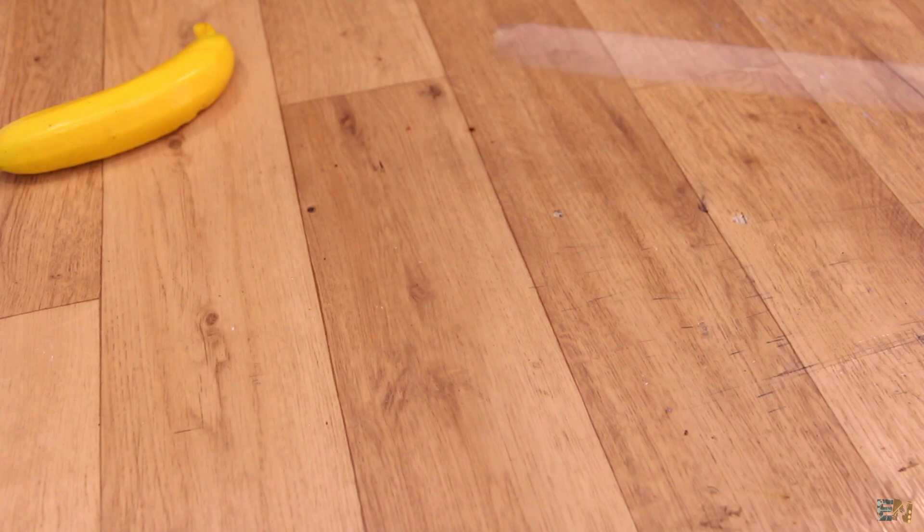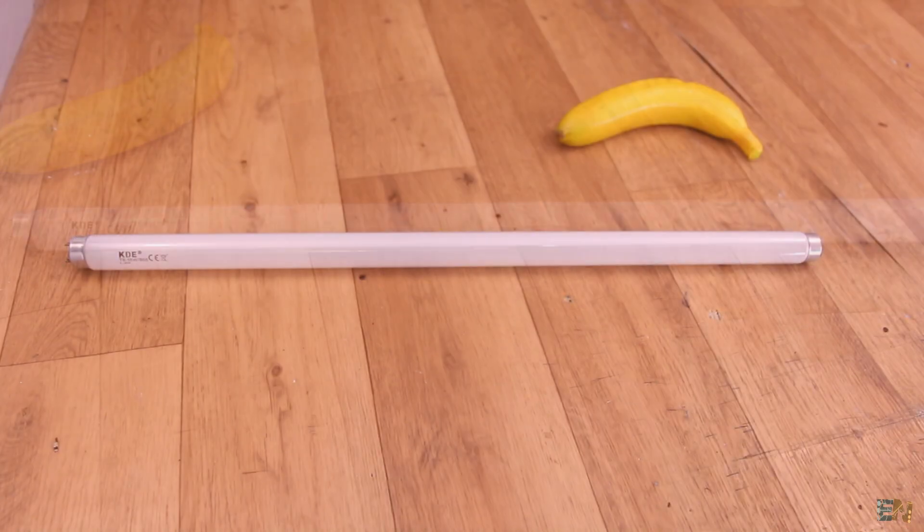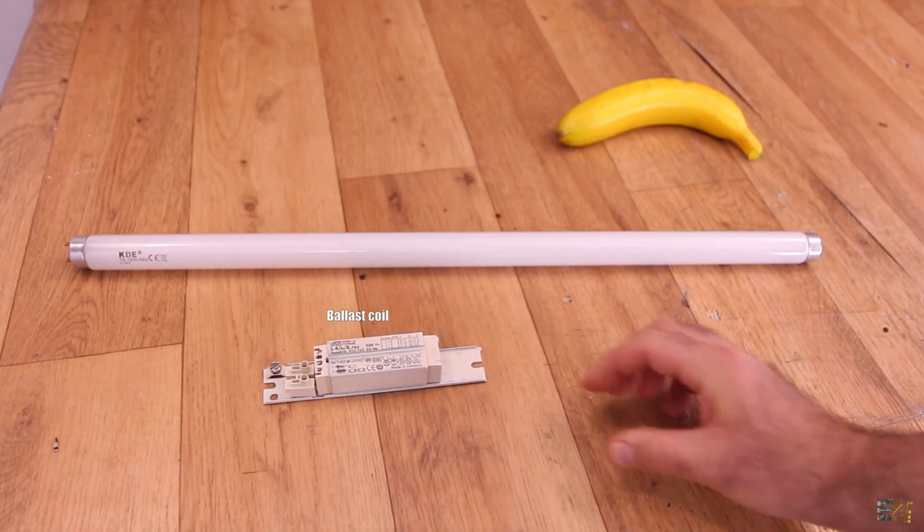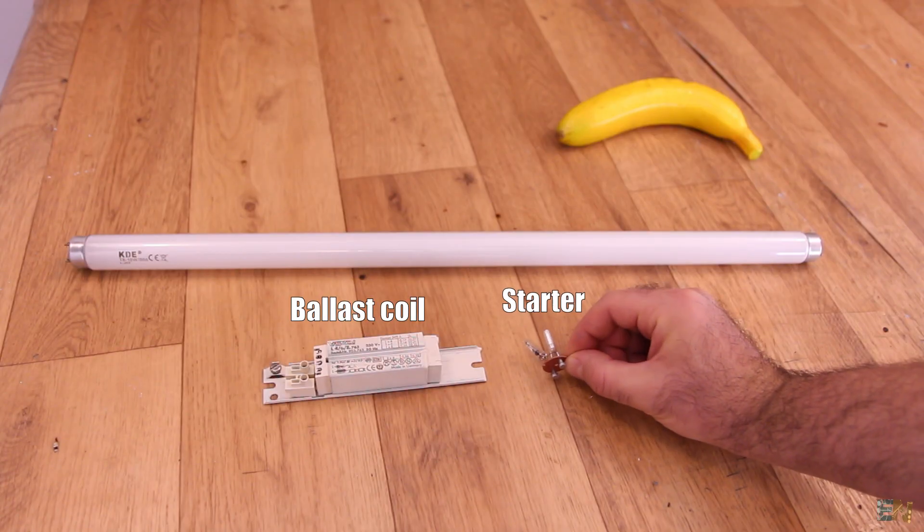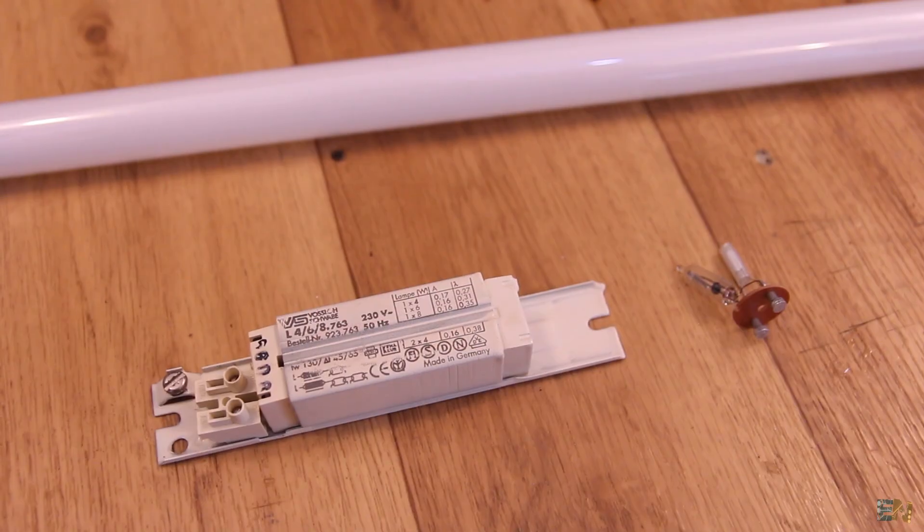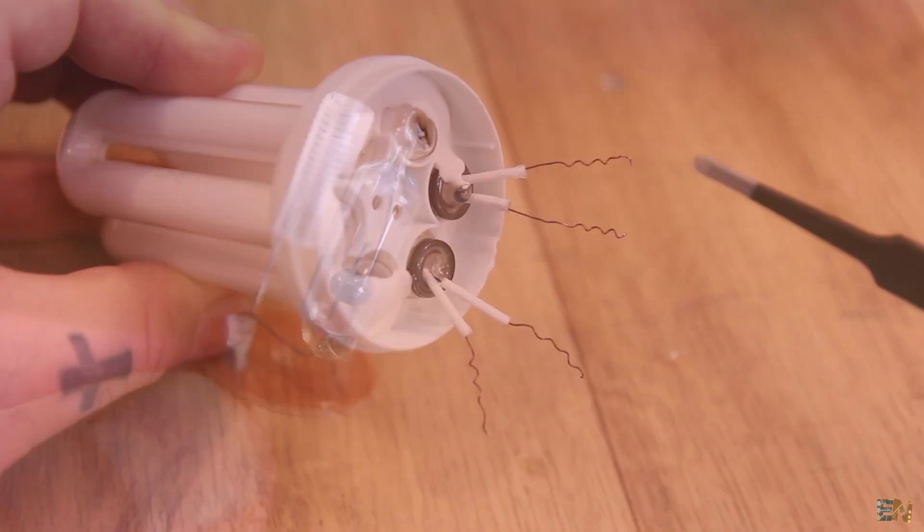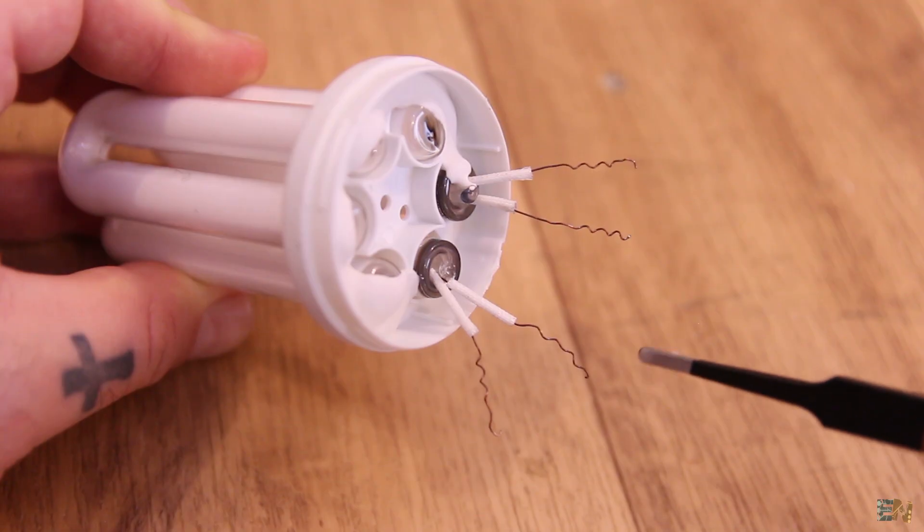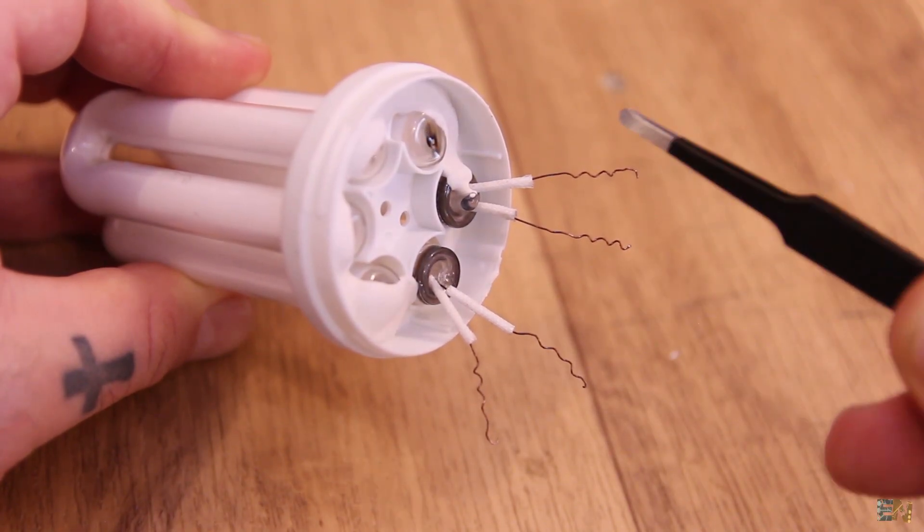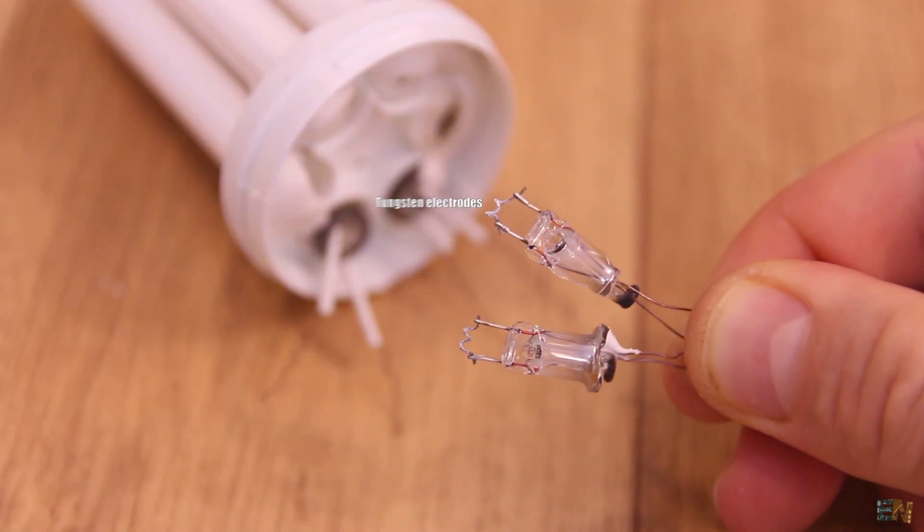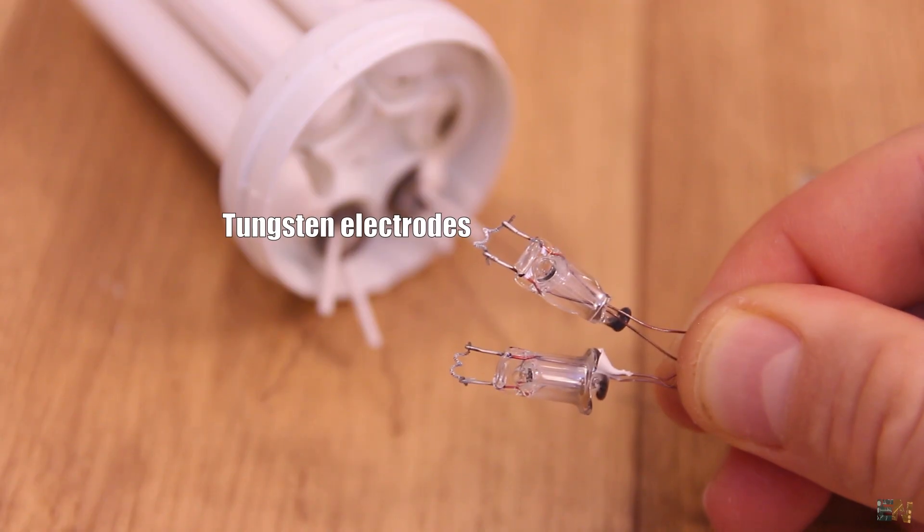The first fluorescent lights weren't using electronic ballast but a combination of a choke coil and a so-called starter. We will see these components and how they work later in the video. If we look at the base of the tube, we can see that it has 4 wires coming out. Inside of the tube, these are connected to some electrodes, one on each end.